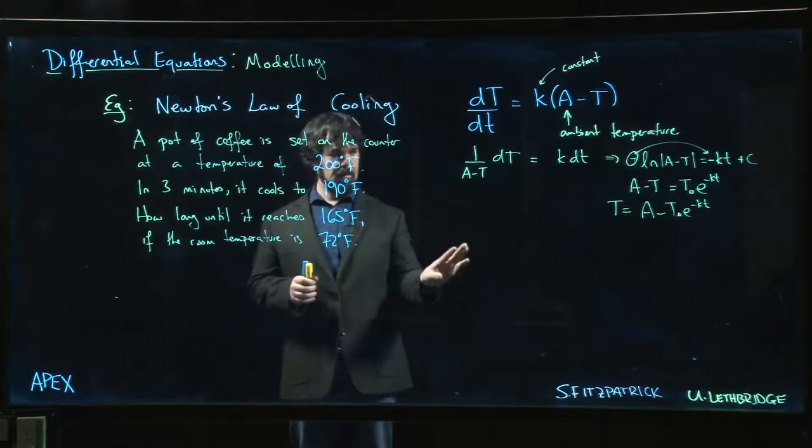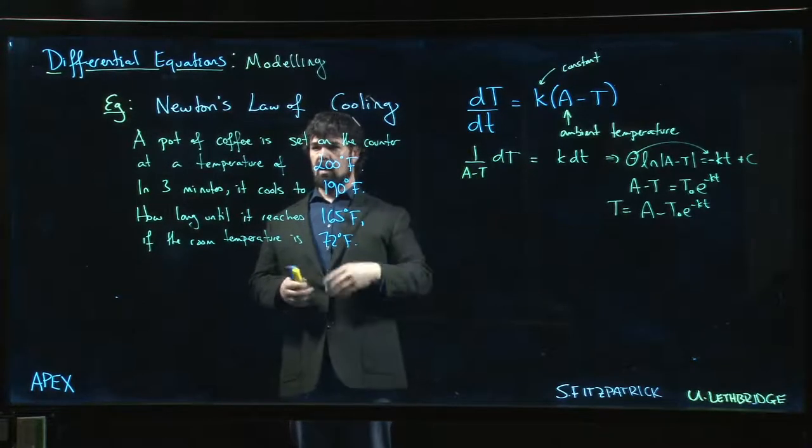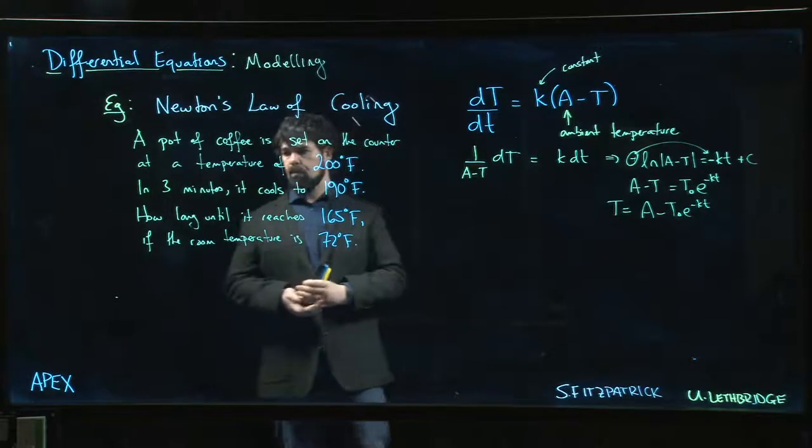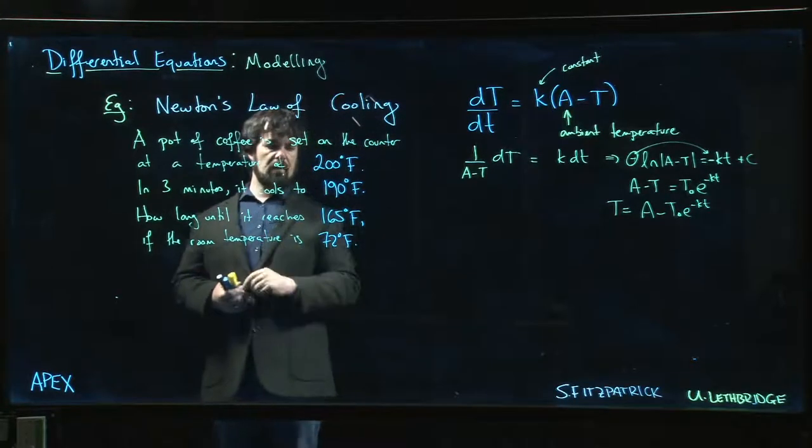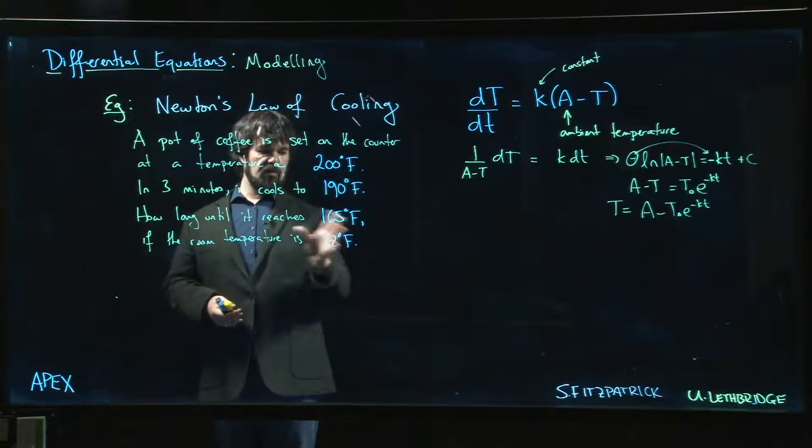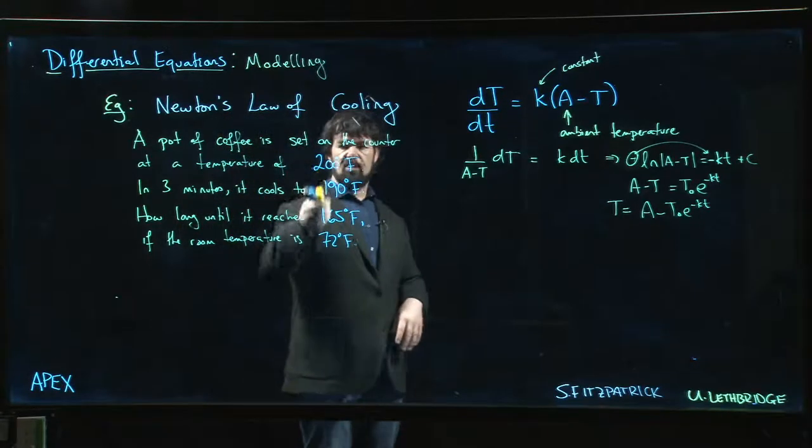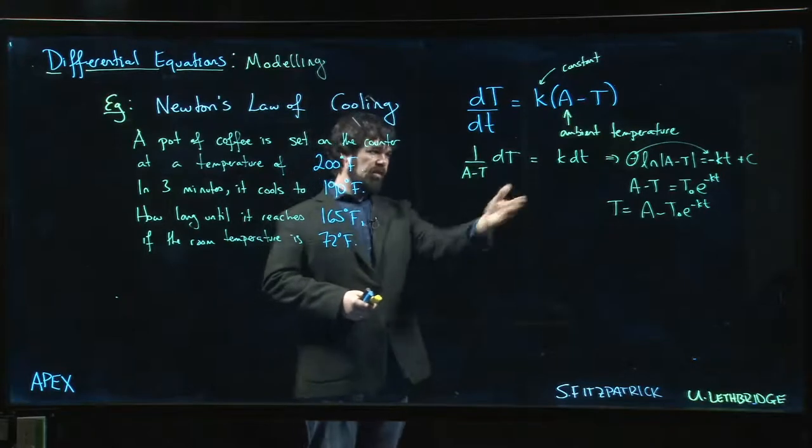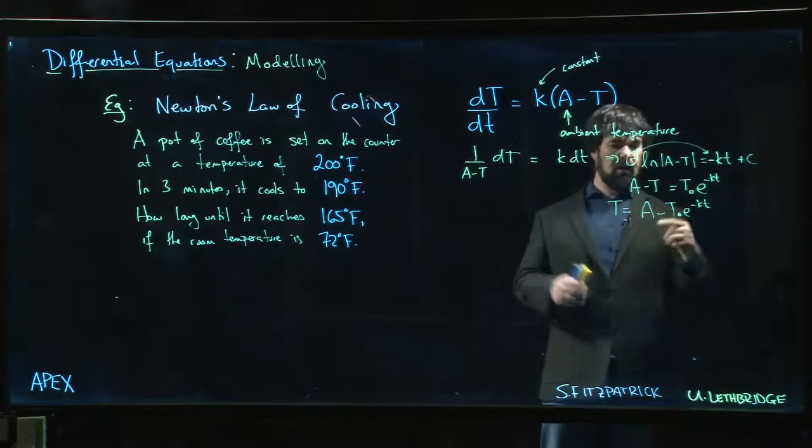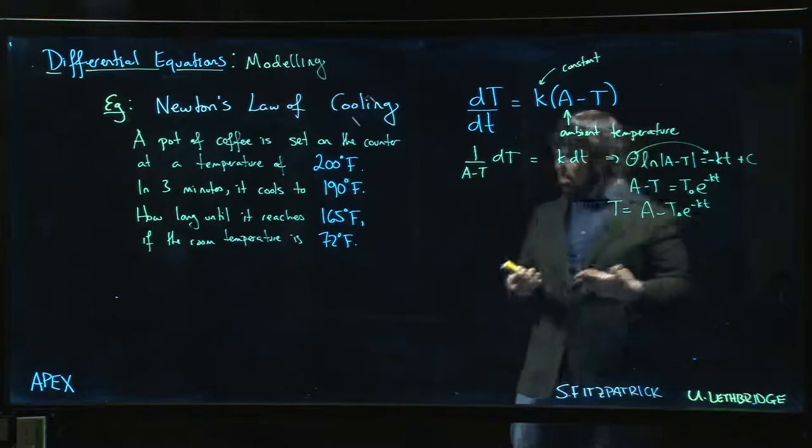Here's a problem that we're going to solve with this model. We've got our pot of coffee, we put it on the counter, it's 200 degrees. Three minutes later we know that it's cooled down to 190. We're willing to drink it once it hits 165, so we're going to try to figure out just how long that's going to take. This initial information is going to let us figure out the value of k. Since we already solved the equation in general, we don't have to go back to the differential equation, we can use the result and put in the values.